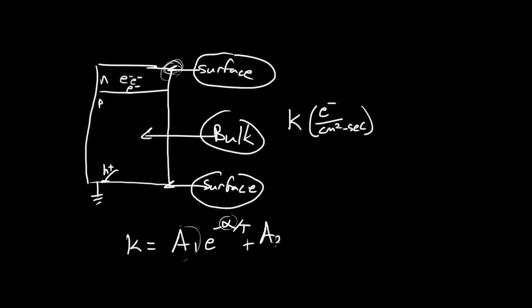Plus A2 times e to the minus beta over T. I'm just arbitrarily picking beta and alpha. I'm saying beta is going to be associated with the bulk. This pre-exponential factor is going to be associated with the bulk. And then the final thing is A3, e to the minus gamma over T. That's going to be the term from the last surface-generated dark current.